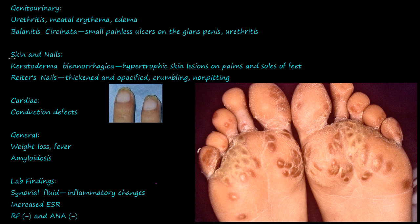Under skin and nails, this picture shows keratoderma blennorrhagica — hypertrophic skin lesions on the palms and soles of the feet. There are also Reiter's nails: thickened, opacified, crumbling, non-pitting nails. You can see how the nails become more white and opacified, then start getting thick, and eventually start crumbling and breaking off.